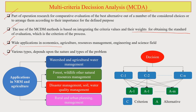Various types of MCDA techniques are available; which one to use depends on the nature and type of problem at hand. Let us now look at the basic structure or skeleton of multi-criteria decision analysis. We will be focusing largely on natural resource management and agriculture as a case study. The application of MCDA in natural resource management and agriculture — how you can actually utilize this technique — is our focus.